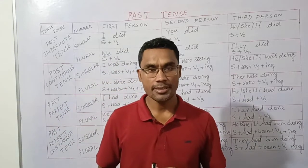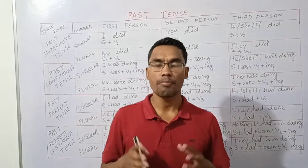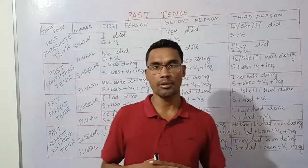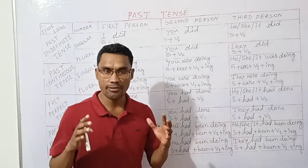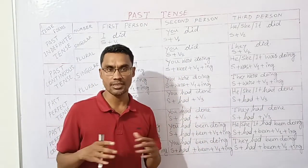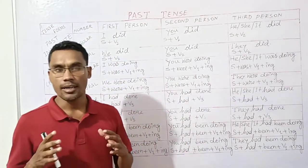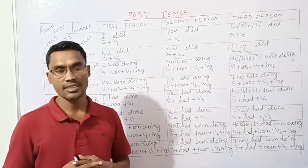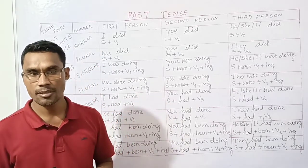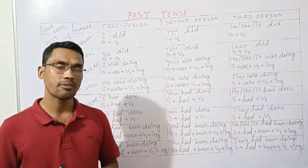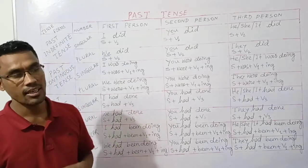I am going to go into English grammar — the past tense. The past tense includes: past indefinite tense, past continuous tense, past perfect tense, and past perfect continuous tense.